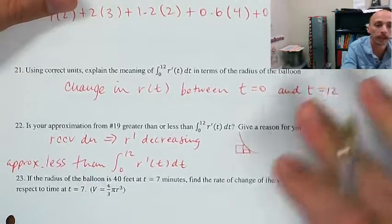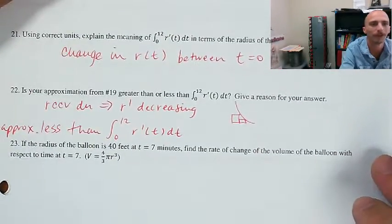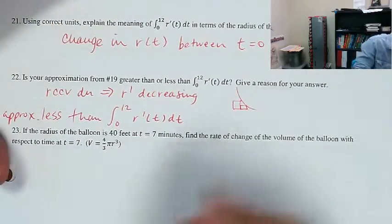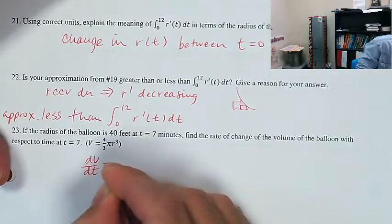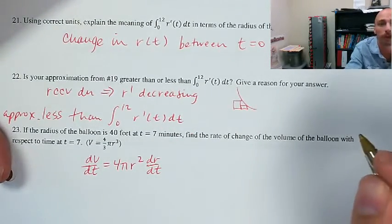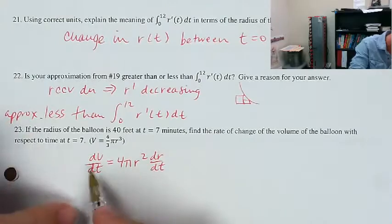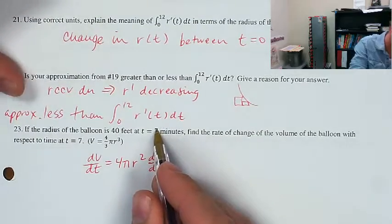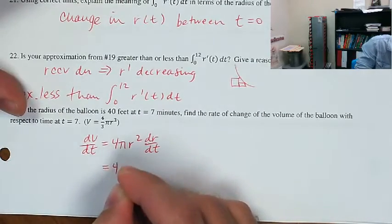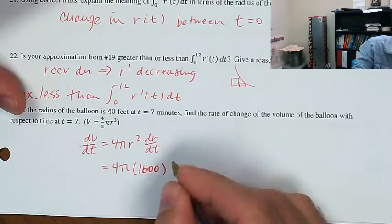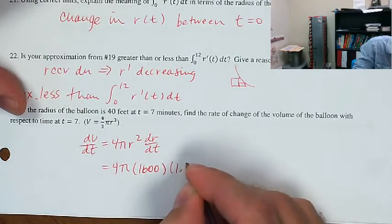If the radius of the balloon at t = 7 is 40, find the rate of change of the volume with respect to time at t = 7. Related rates — let's do it. dV/dt = 4πr² · dr/dt. We're finding dV/dt. The radius is 40, and dr/dt is given by R′(7) from the table, which is 1.2. So: 4π × 40² × 1.2 = 4π × 1600 × 1.2.